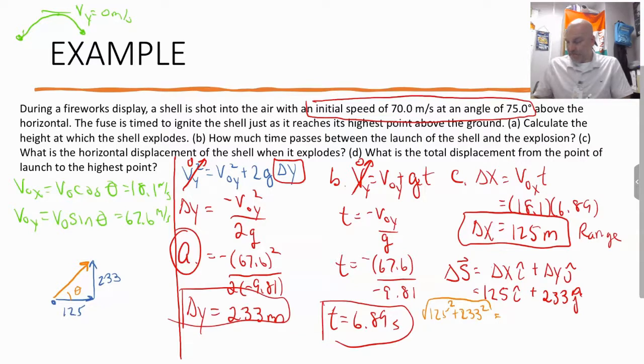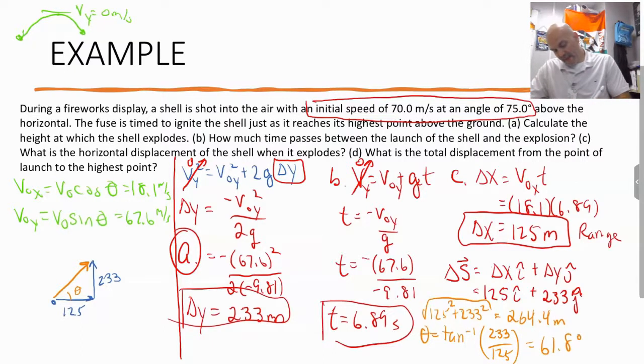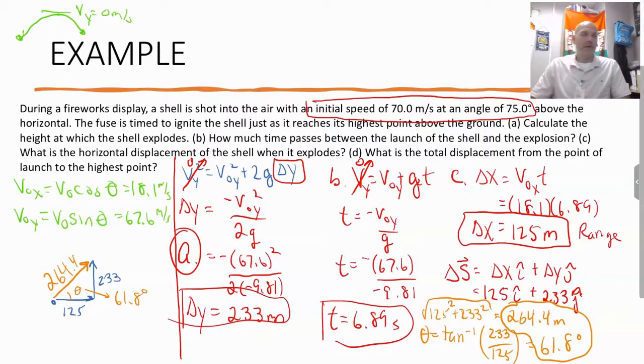of our displacement. So it's going to be 264.4 meters. And then the angle is going to be the inverse tangent of our y value. So 233 over our x value. So shift tangent, 233 divided by 125. And that's going to give us, so there is our displacement, 264.4 meters, which is that right there. And then the angle is going to be 61.8 degrees.